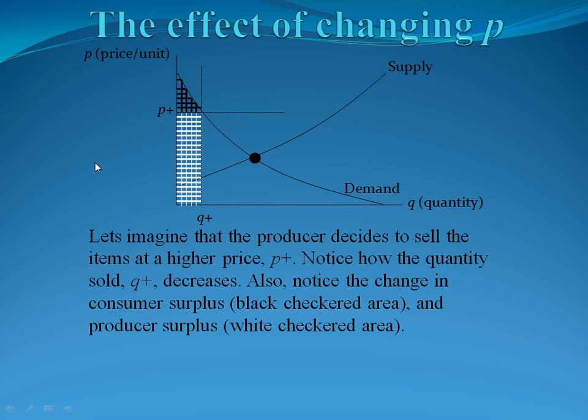So what if we looked at a price that was not at equilibrium? Notice what happens here. The consumer surplus gets smaller because now there's less people willing to buy. So the effect of changing that price will lower the amount of consumer surplus. Same thing we can see here with the supplier surplus, or producer surplus, by the white checkered area. By raising the price, they get a little bit more area under the curve. And so they might make a little bit more money than they did at equilibrium. So at P plus Q plus, which is our new point where we intersect, we notice that the areas have changed.